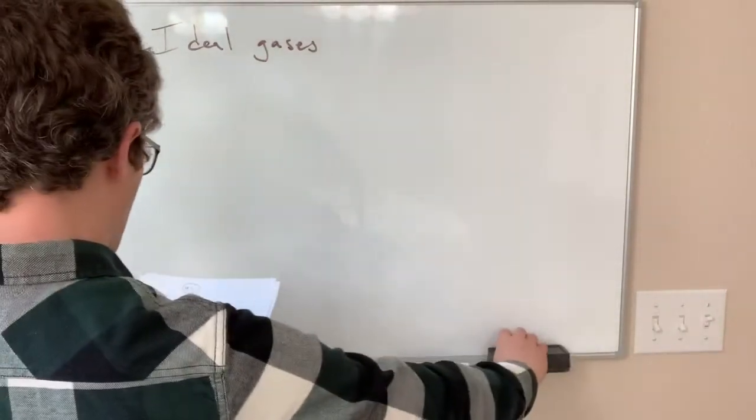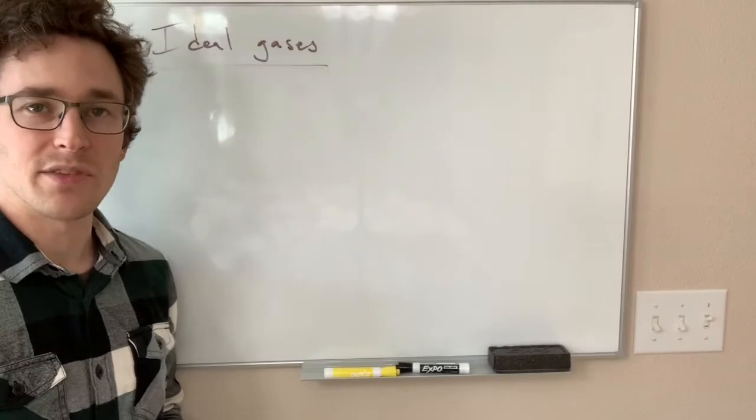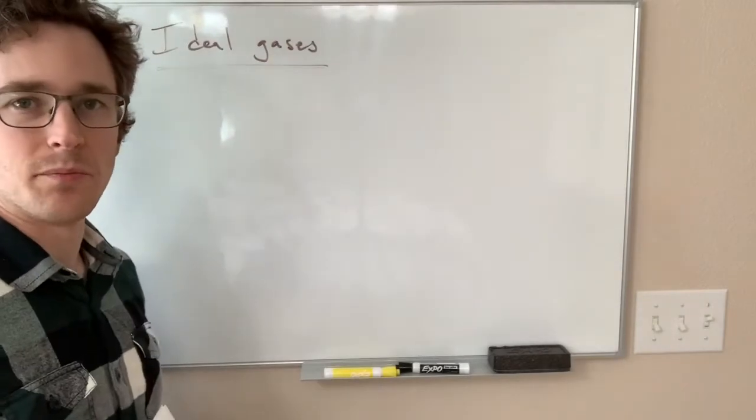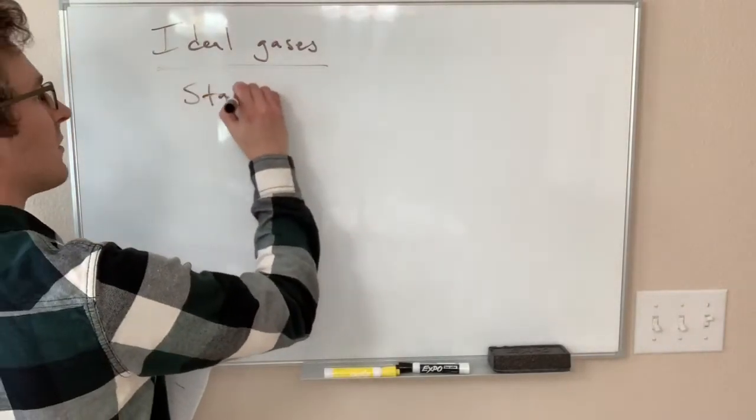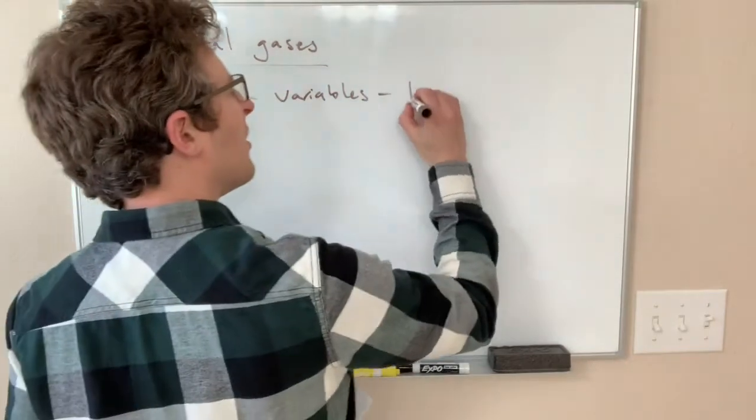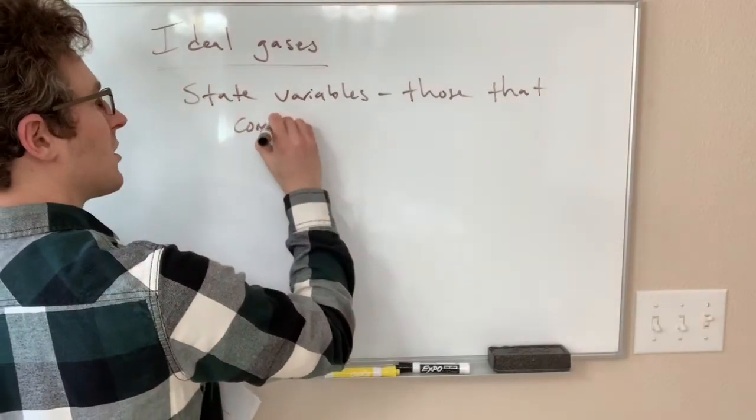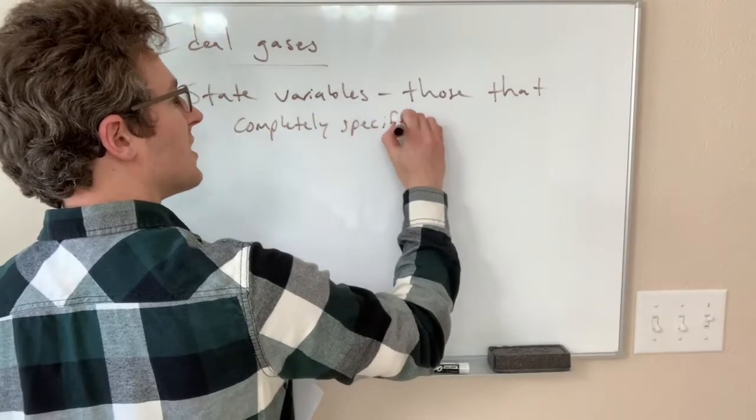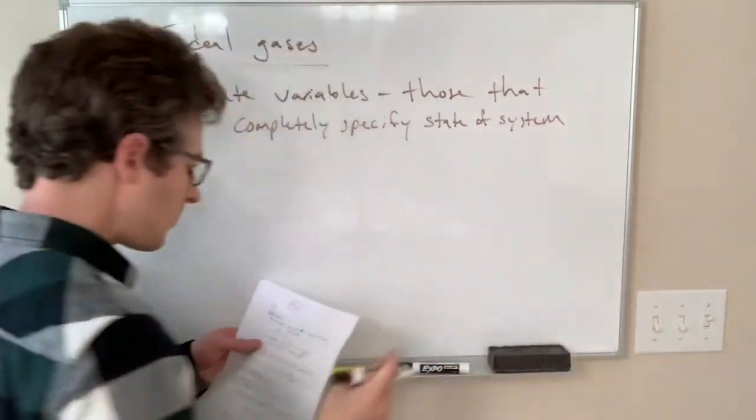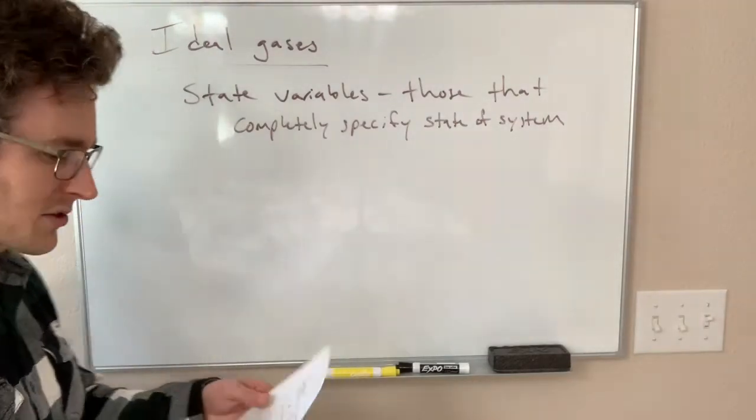So, to describe our ideal gas, we only need a few variables. We don't need to worry about what the velocities of all those particles are. We have these macroscopic variables we can use, and for a thermodynamic system like this, these are called state variables. These are those variables that completely specify the state of the system. Different systems have different state variables. We're just talking about the state variables for an ideal gas.